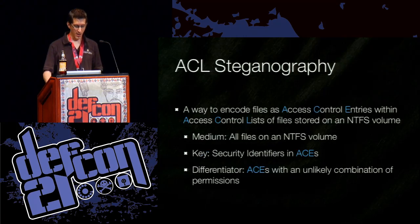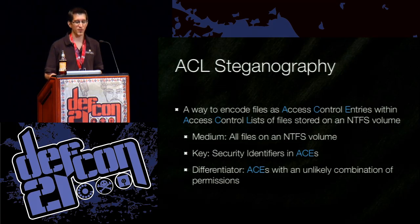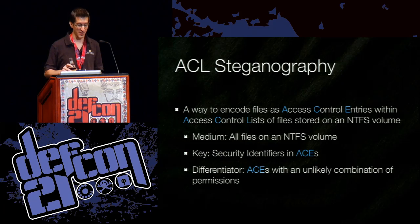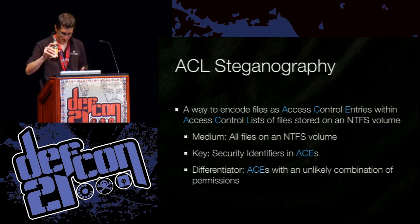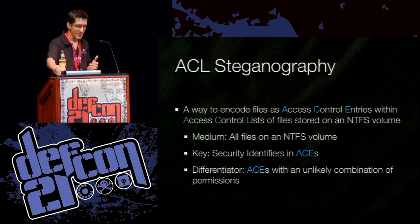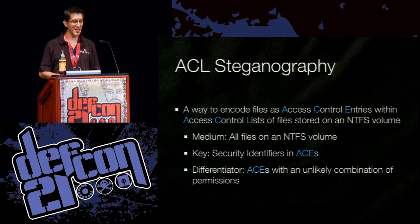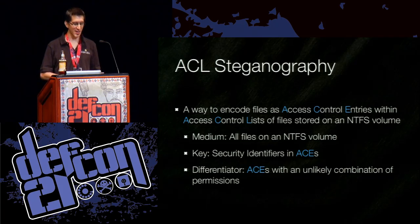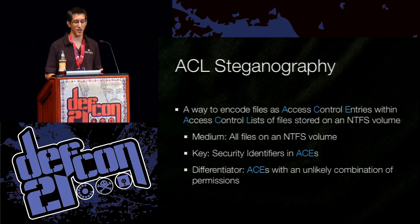With that, let's talk about ACL steganography — the scheme that I developed. It's a way to encode files as access control entries within an access control list on a file on an NTFS file system. The medium is any file on an NTFS file system. The key is security identifiers within the access control entries, and the differentiator is access control entries with an unlikely combination of permissions.